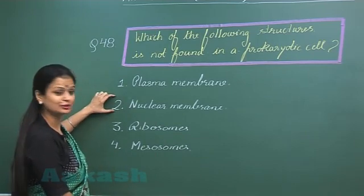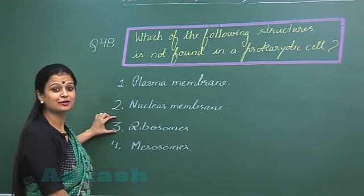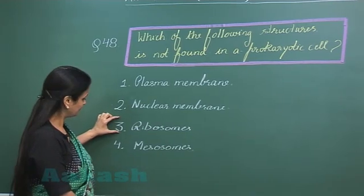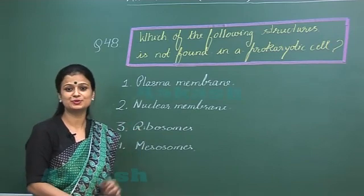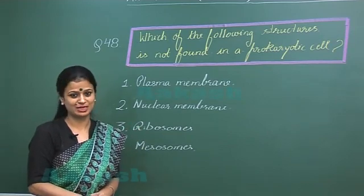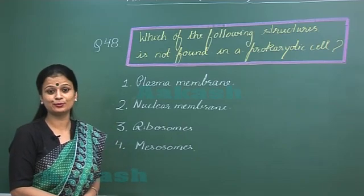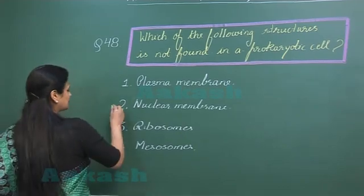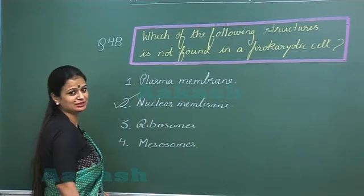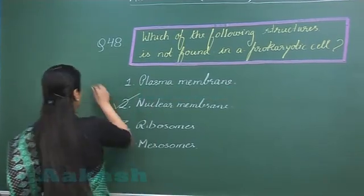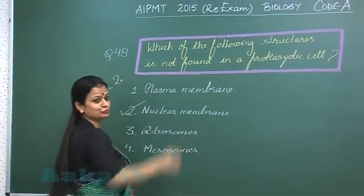The nuclear membrane is absent in prokaryotes. Ribosomes are of the 70S type. Mesosomes are infoldings of the plasma membrane and are also present in prokaryotes. So the structure not associated with prokaryotic cells is the nuclear membrane. The right answer is option number 2.